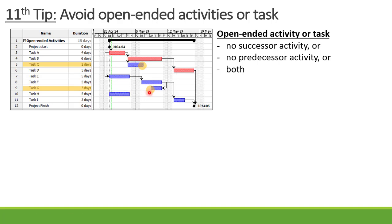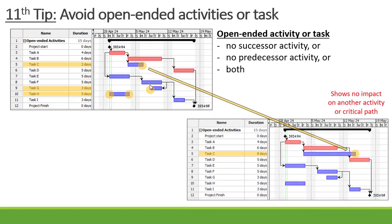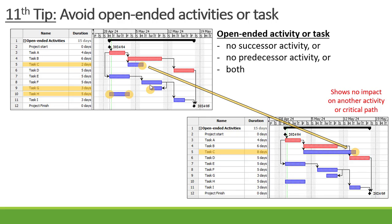Task G doesn't have a predecessor activity. Or it can be an activity like Task H with no predecessor or successor linked to it. So what happens if we delay an open-ended activity? If Task C is delayed, it actually shows that there's no impact on another activity or even on your critical path, which is in actual fact incorrect.